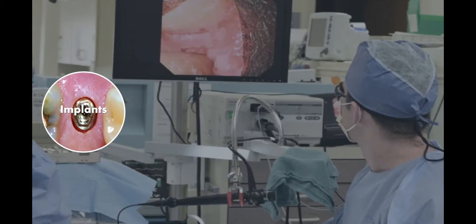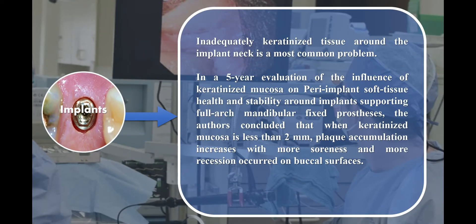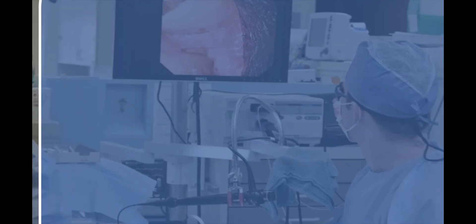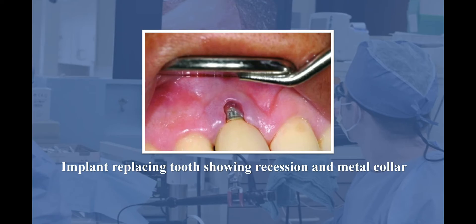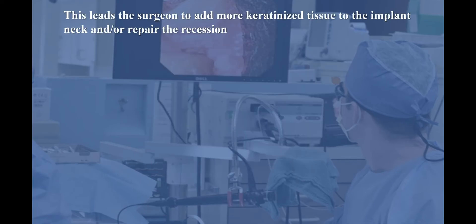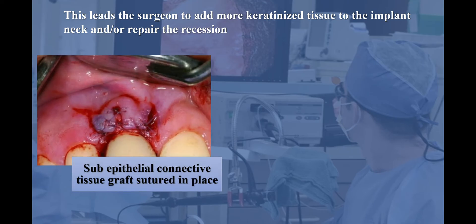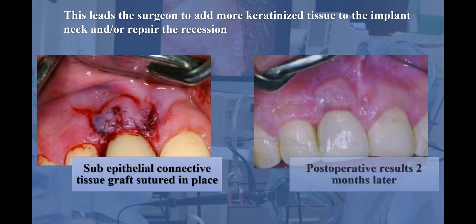Regarding implants, inadequate keratinized tissue around the implant neck is the most common problem. In a five-year evaluation of the influence of keratinized mucosa on peri-implant health, it was found that when keratinized mucosa is less than 2 mm, plaque accumulation increases with more soreness and more recession occurs on the facial surface. This case shows recession at the metal collar. The surgeon added keratinized tissue to the implant neck and repaired the recession by connective tissue graft and suturing in place. This is the postoperative result after two months.